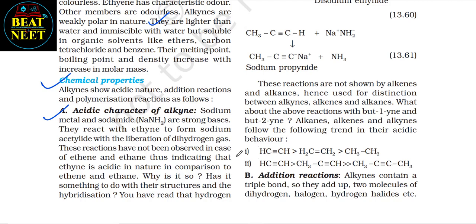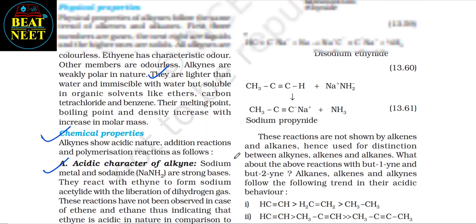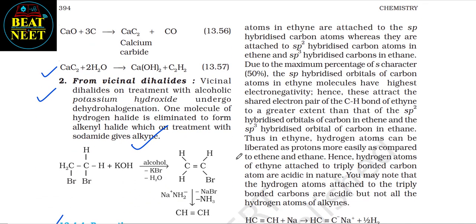Chemical properties — (a) Acidic character of alkynes: sodium metal and sodamide (NaNH₂) are strong bases; they react with ethyne to form sodium acetylide with liberation of dihydrogen gas. These reactions are not observed with ethene and ethane, indicating that ethyne is acidic in nature. The hydrogen atoms in ethyne are attached to sp-hybridized carbon atoms, whereas in ethene they are attached to sp²-hybridized and in ethane to sp³-hybridized carbon atoms.